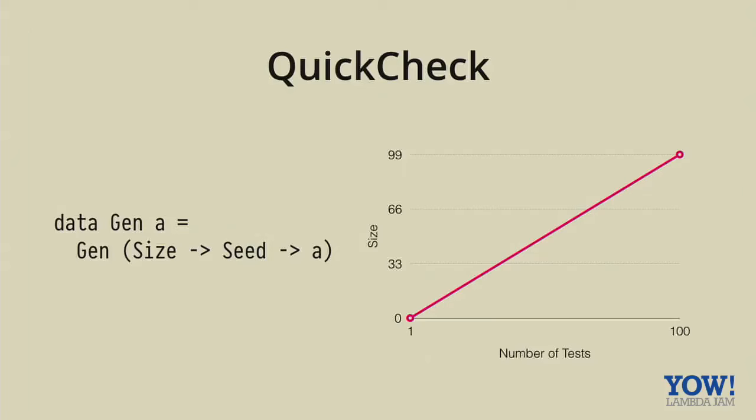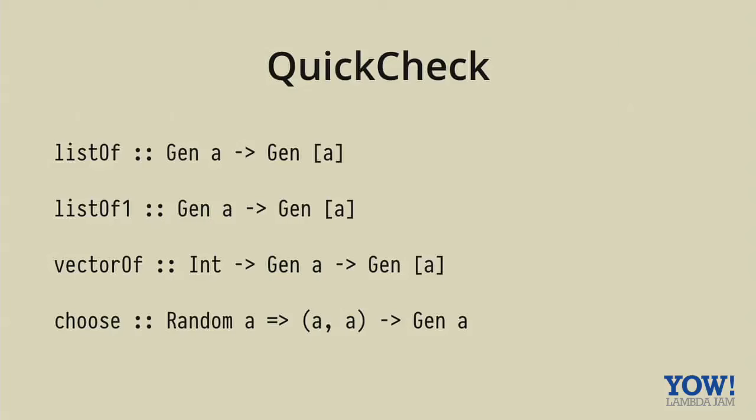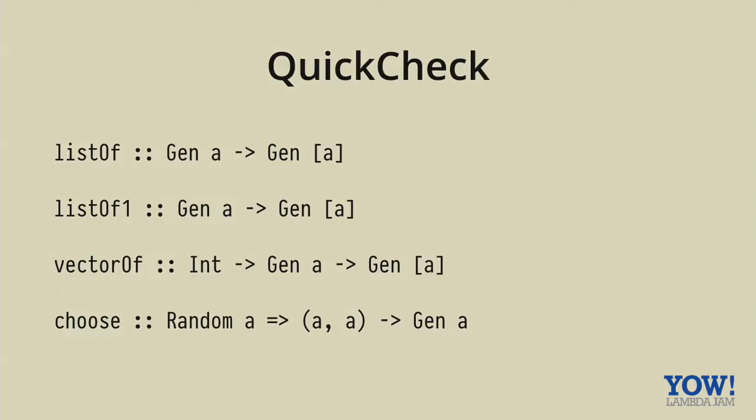If we look at some of the QuickCheck combinators, some of them are affected by size and some of them aren't. So choose chooses a random value between these two bounds. And that's not affected by the size parameter at all. The list of combinators, they are affected by the size. So as the size increases, you'll get larger and larger lists. So what if we wanted to generate a list, which has at least two elements, you could generate a number and then pass it to vector of, and that would give you a random size list. But list shrinking is sort of special and we might break it by doing that. So in hedgehog, we have a slightly different setup. So the hedgehog combinators, one to one with types for the most part. And they're parameterized by these range things. So what is a range?